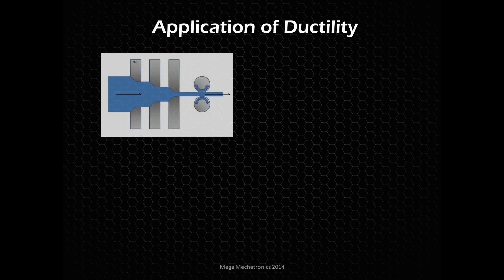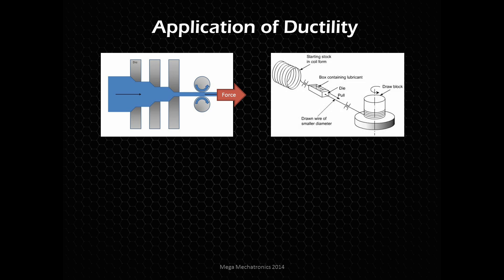An application of ductility: here's a wire drawing process. We're pulling some sort of wire through dies. We're not pushing it — if we're pushing it, we'd be extruding it — but this is drawing. As we pull that wire from a coil stock of a certain size, we add some lubricant, pull it through a die, and we're stretching that material out. It is cold working that material as well.